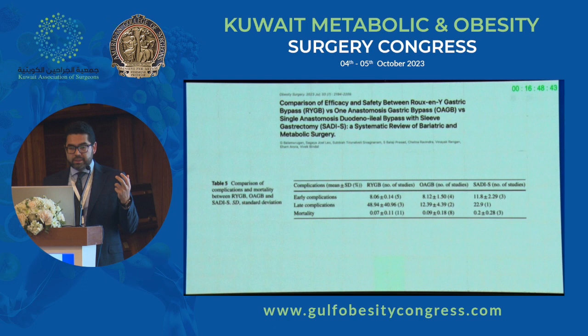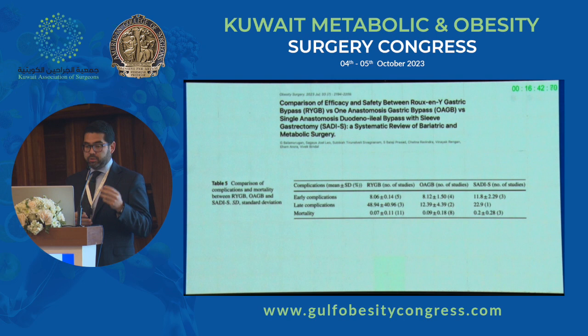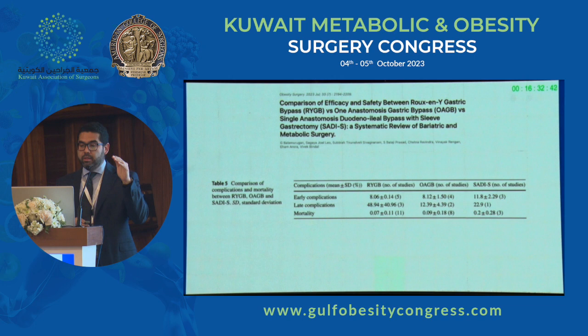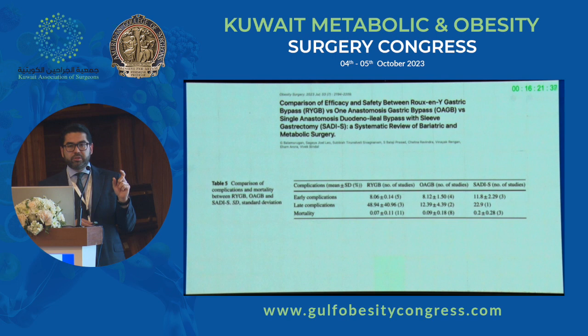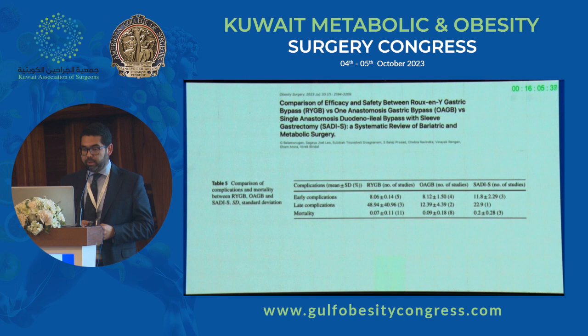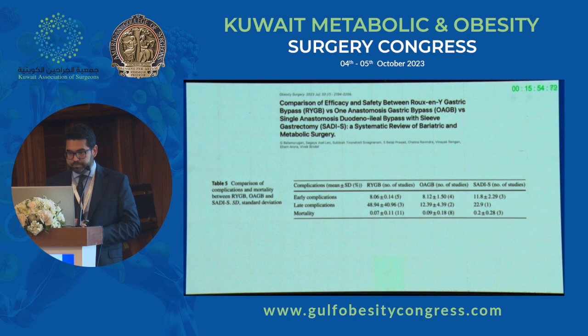Talking about the 1-anastomosis gastric bypass, most of the data available right now compares it to other operations such as the SADI sleeve and standard bypass. If you look at the data for early complications in series of 1-anastomosis gastric bypass compared to modern series of Roux-en-Y gastric bypass, there's really not a significant difference. For late complications, this is a very broad topic — you can talk about marginal ulcers, internal hernias, which can happen after either procedure. We also have to include nutritional complications, and unfortunately we know much more about Roux-en-Y gastric bypass than about 1-anastomosis gastric bypass in this regard.